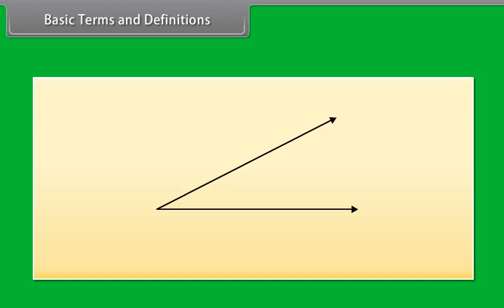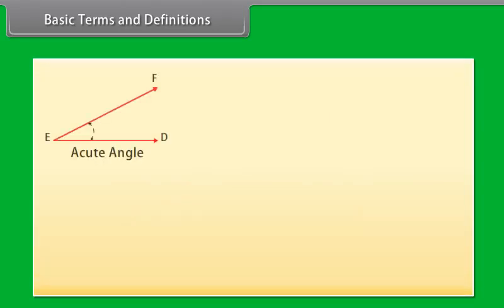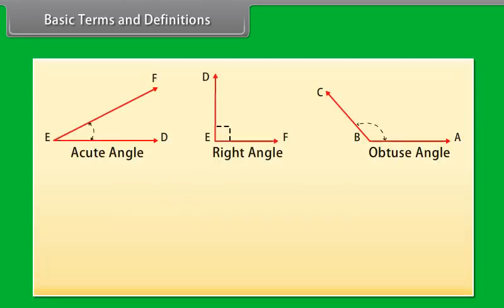Now come to an angle. An angle is formed when two rays originate from the same endpoint. The rays making an angle are called the arms of the angle, and the endpoint is called the vertex of the angle. We know about different types of angles like acute angle, right angle, obtuse angle, straight angle and reflex angle. Let's go through them one by one.